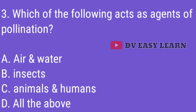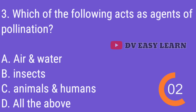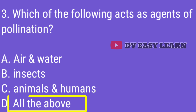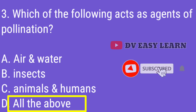Q3. Which of the following acts as agents of pollination? Correct answer: All of the above — air and water, insects, animals and humans.